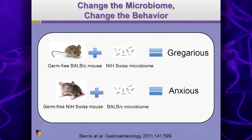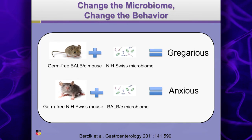Then there's the Swiss mouse — probably a good name. They're very smooth, they work the room. These are very confident mice. If you take the feces from a suave, working-the-room Swiss mouse and give it to a timid, anxious mouse, it becomes a gregarious mouse.